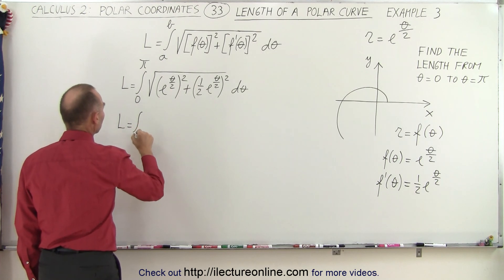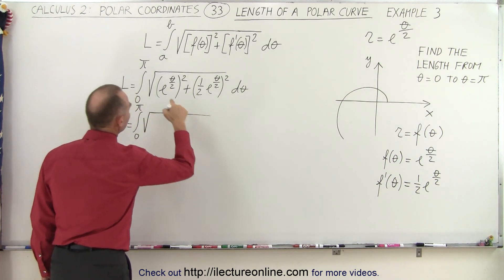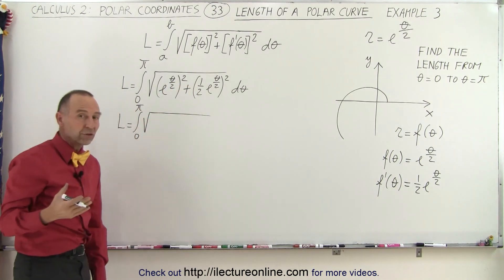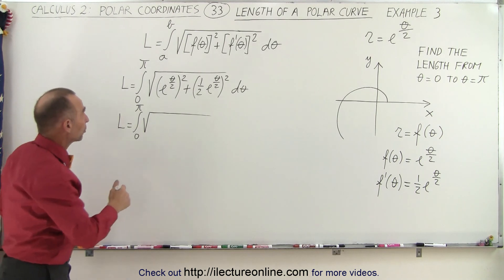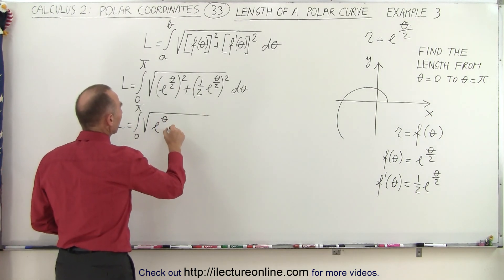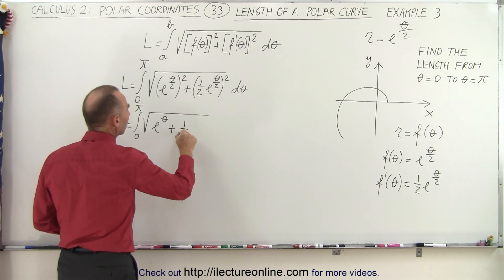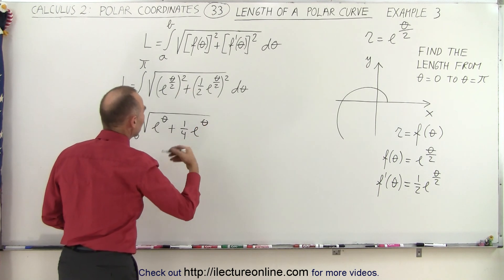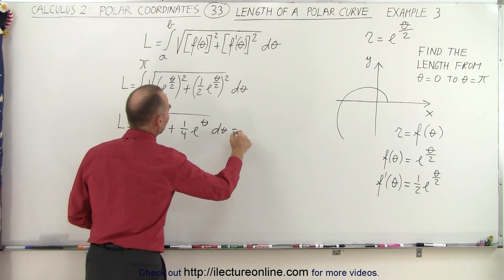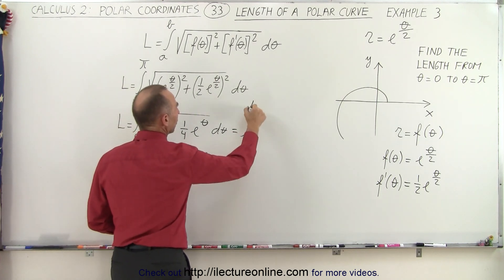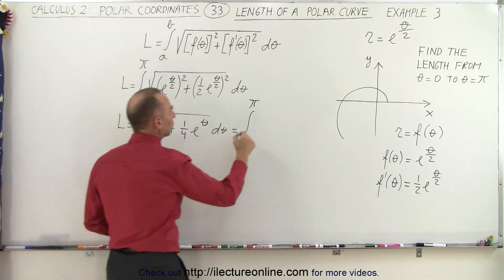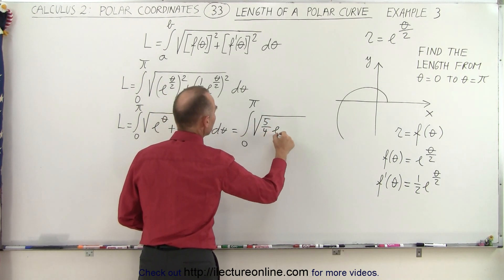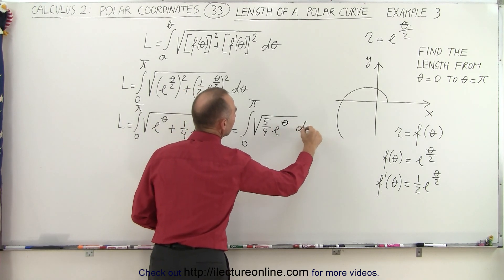The length is equal to the integral from 0 to pi of the square root of e to the theta over 2 squared. When you square an exponent it's like multiplying the exponent, that gives you e to the theta. Plus 1 half squared is 1 fourth, and this e to the theta over 2 squared gives us e to the theta. So that simplifies to the integral from 0 to pi of the square root of 5 fourths e to the theta, d theta.